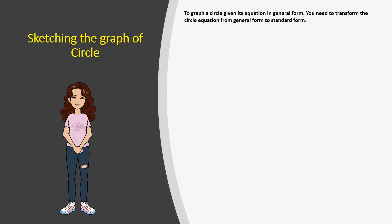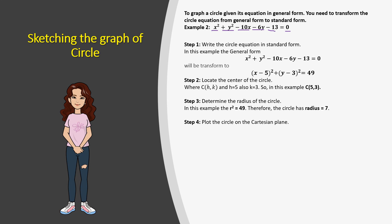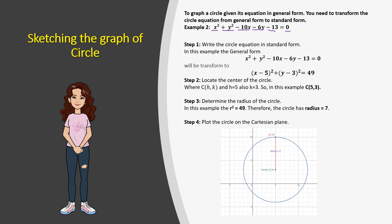Now let's graph a circle using the general form. Here's the example: x squared plus y squared minus 10x minus 6y minus 13 equals to zero. First, let's write the equation in standard form. We already studied how to change general form to standard form, so the standard form will be x minus 5 squared plus y minus 3 squared equals to 49.